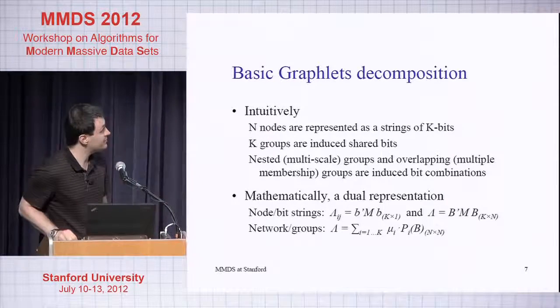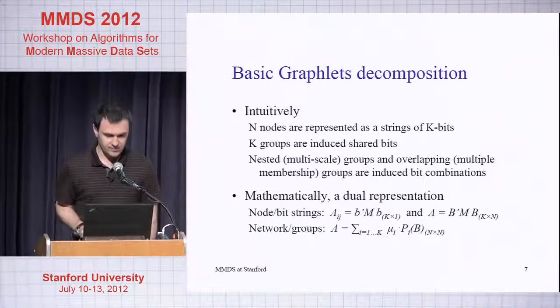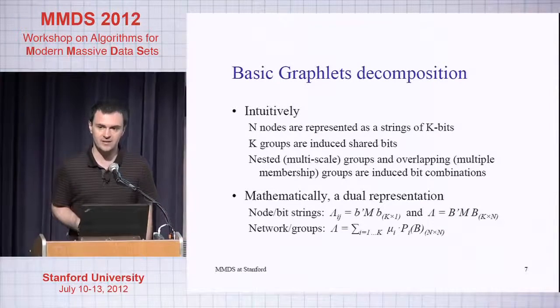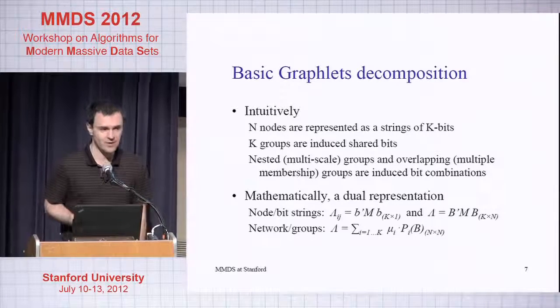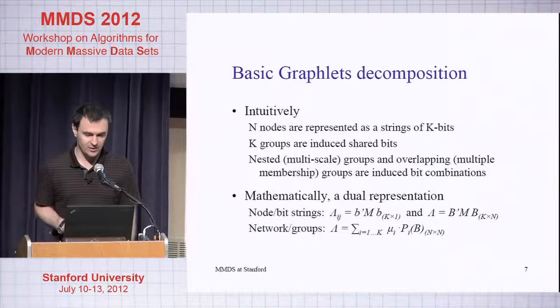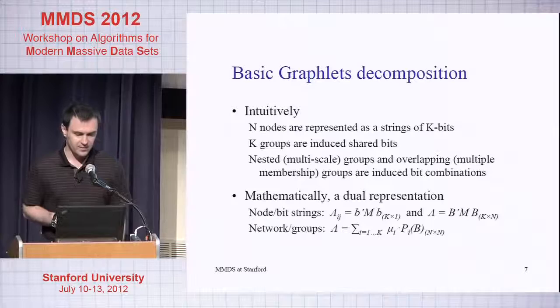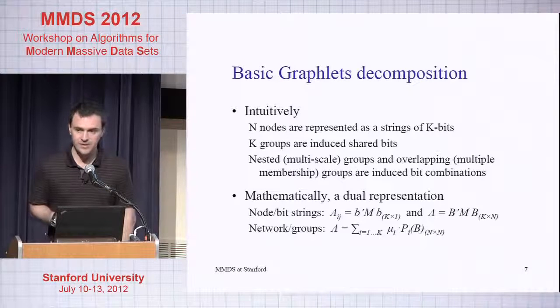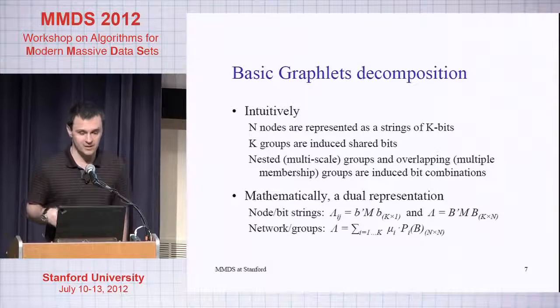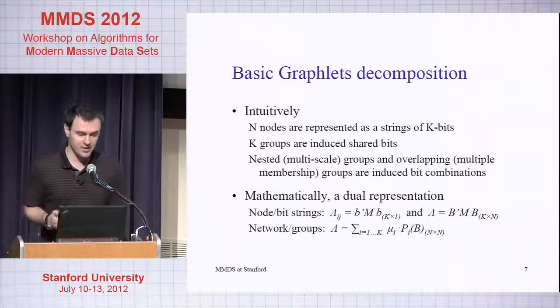The model is pretty simple but I will still say a few things about it. n nodes are represented as bit strings of length K. That's what I mean by a binary factor graph model. The duality means that each one of these bits is capable of inducing a subgraph.